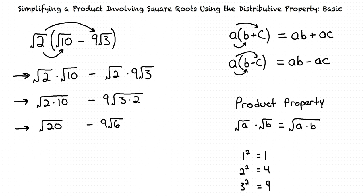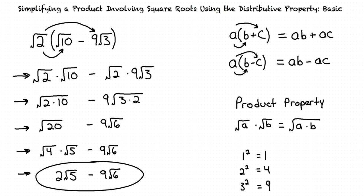For our example, we want the number we are taking the square root of to have a perfect square as a factor. The square root of 20 allows us to do this. Using the product property for square roots, we can rewrite the square root of 20 as the square root of 4 — which is the perfect square we want — times the square root of 5. We know that the square root of 4 is 2. So now we have 2 times the square root of 5 minus 9 times the square root of 6.